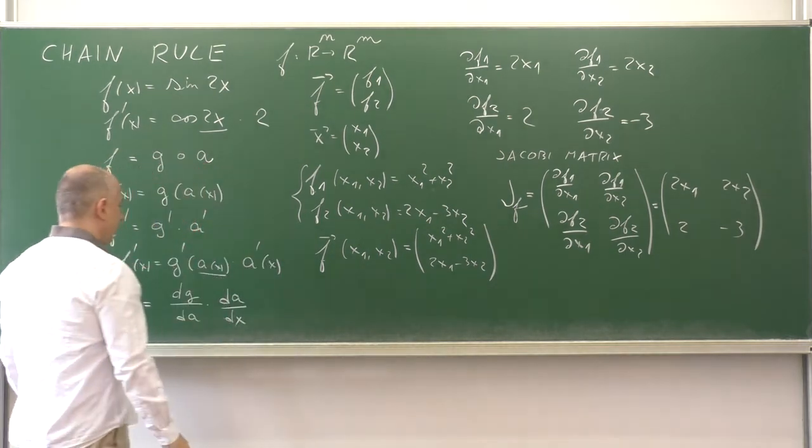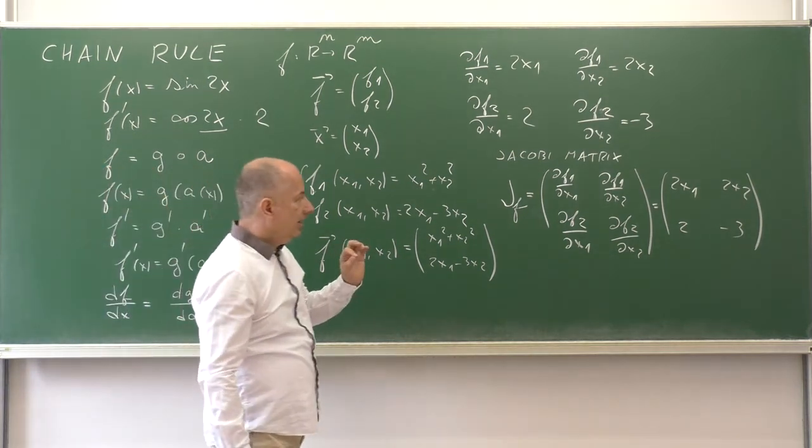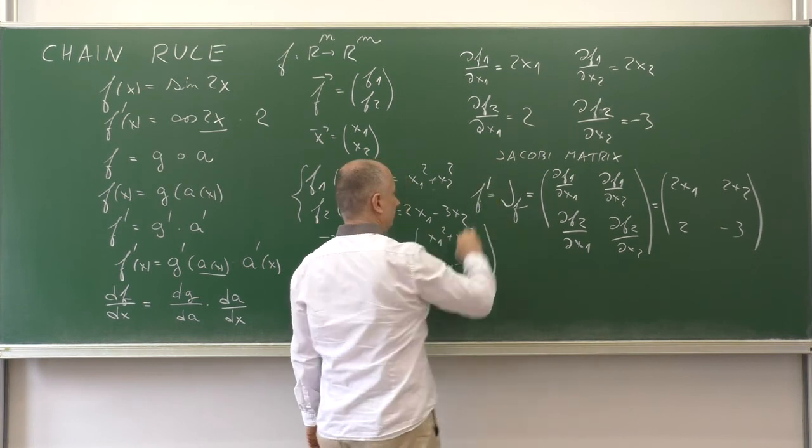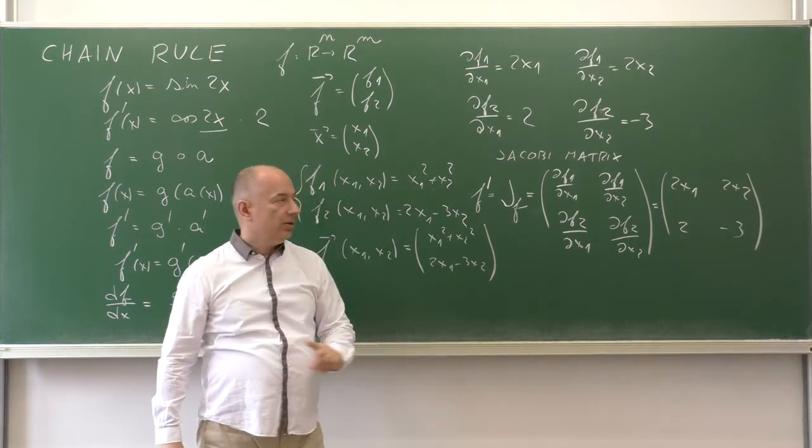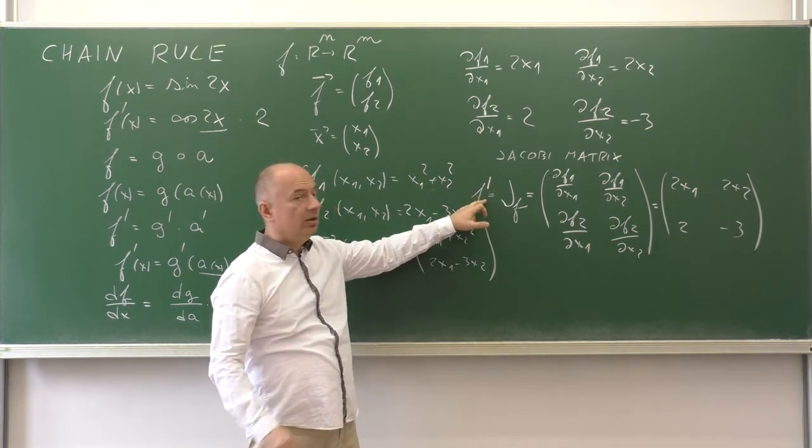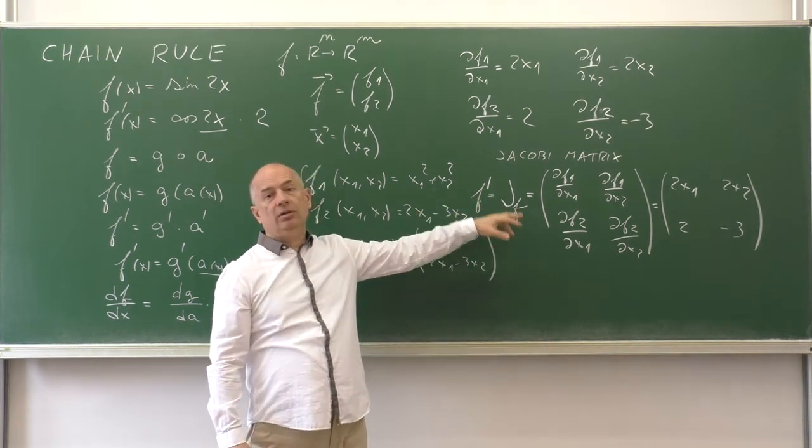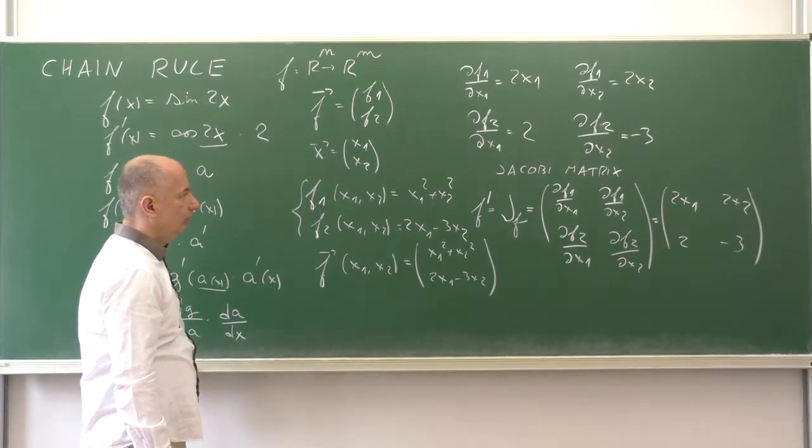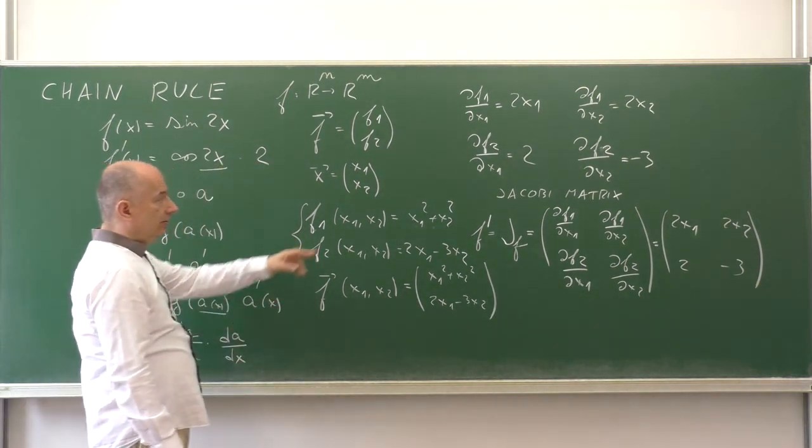And if we want to arrive at a result similar to this one, sometimes we can denote this even f'. But this is dangerous. f' usually means a derivative of a scalar function of a scalar argument. Here, we mean the Jacobi matrix of the first order derivatives of a vector function of a vector argument. Well, and in the next section, we will generalize the chain rule for functions like that.